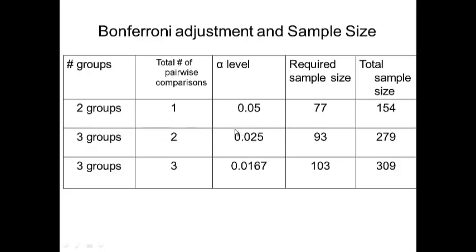So you divide the alpha level by two, which gives 0.025, and then you plug that alpha into PS. It will say you require 93 patients in each group; then you multiply that by three to get the total number of subjects for your study.